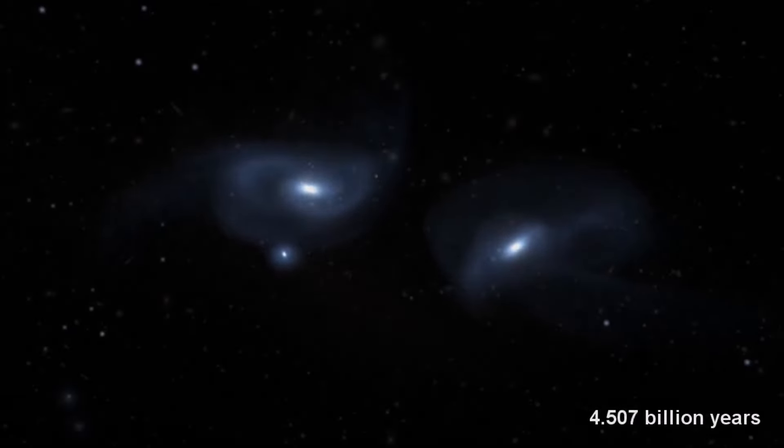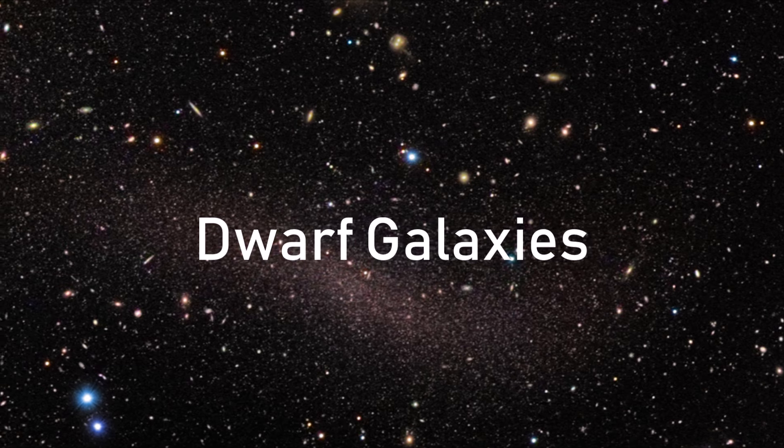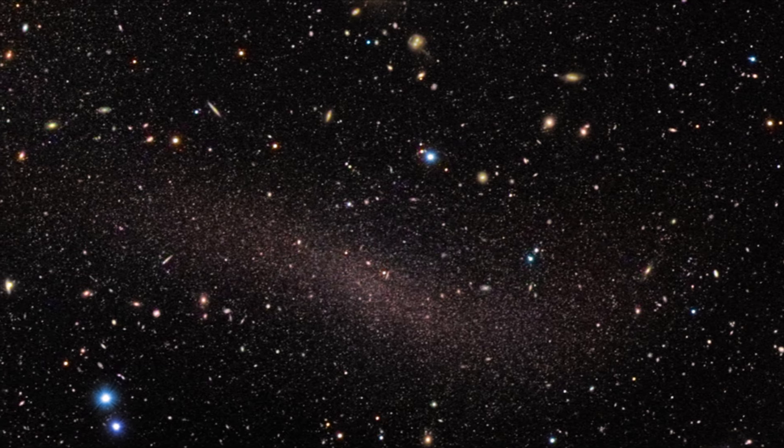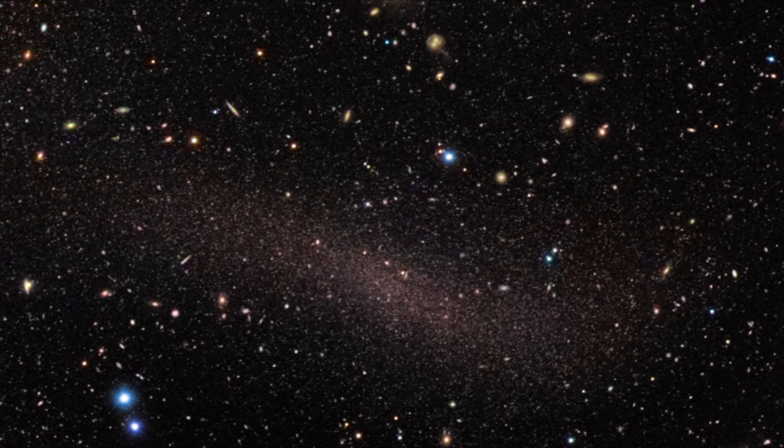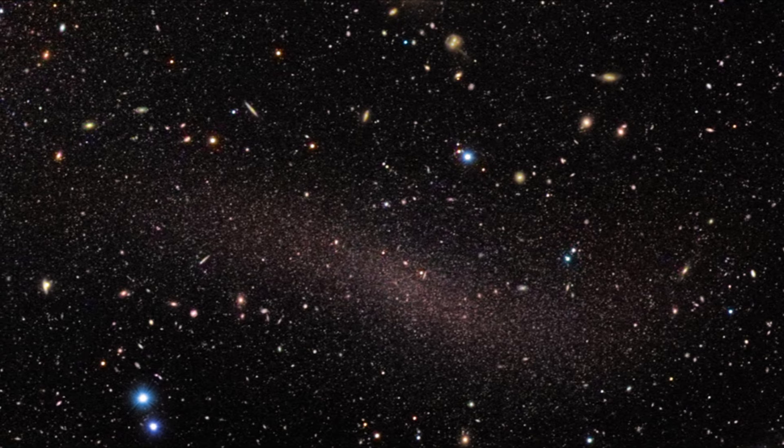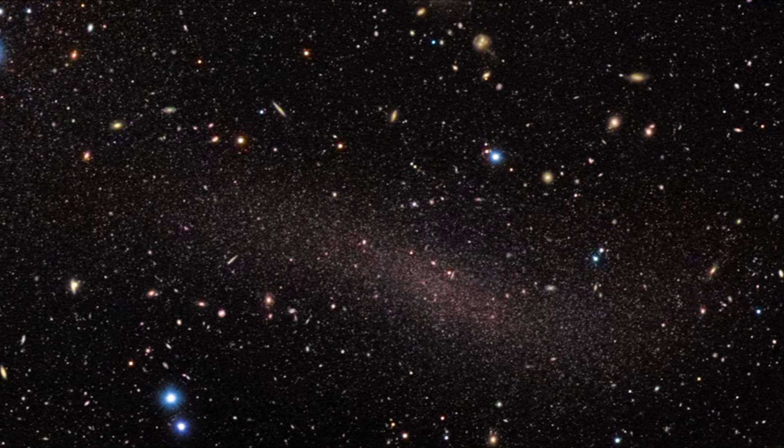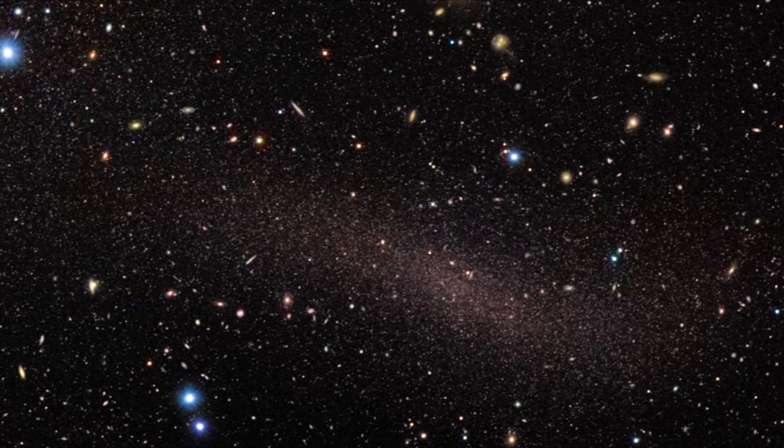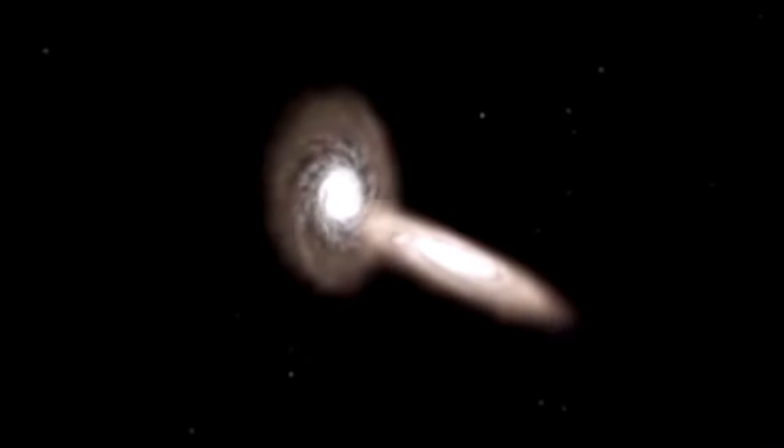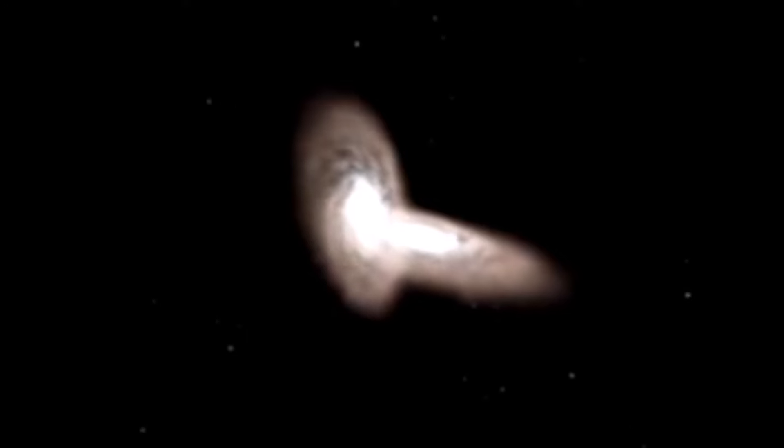The first stage of this process begins with dwarf galaxies. These smaller, less structured galaxies formed from early star clusters, and are still forming all over the universe. Dwarf galaxies can house up to a few hundred million stars at a time, and tend to only be a few hundred light years across.